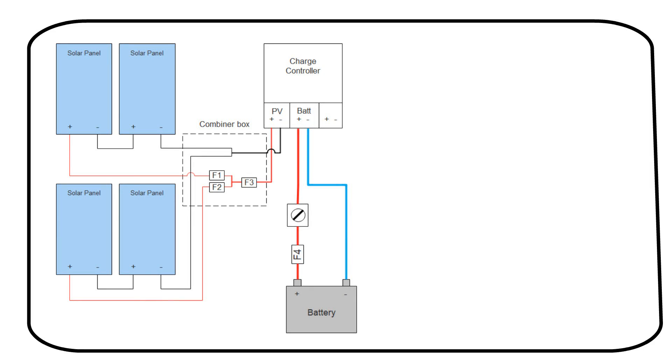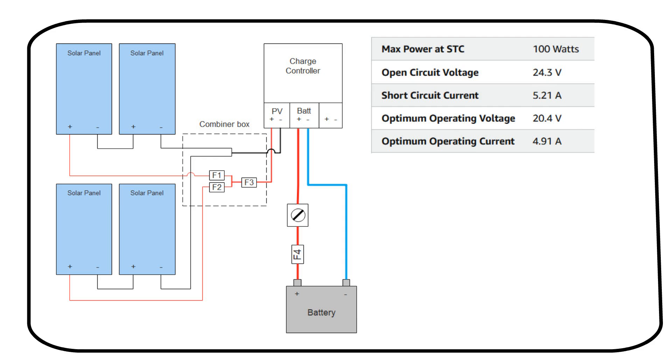Let's dive into a more complex scenario: configuring 2 solar panels in series and then in parallel, which calls for a combiner box. This is called a 2S2P system. The combiner box should be placed as close to the panels as possible. These are the specifications for the solar panel we will be using.